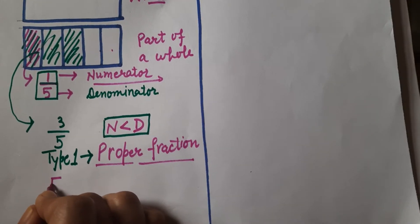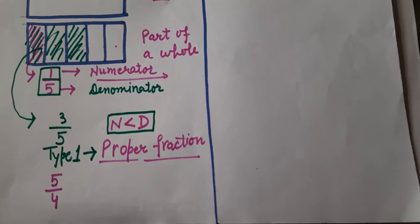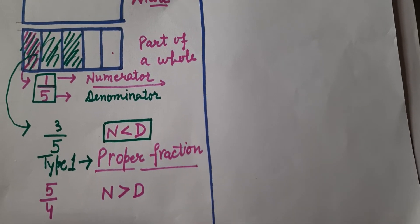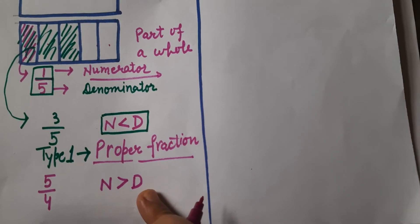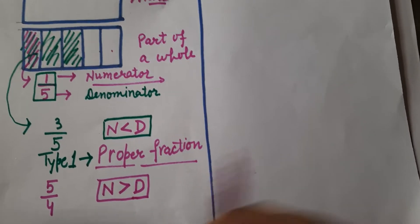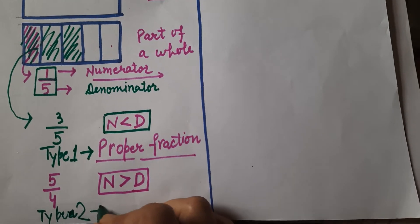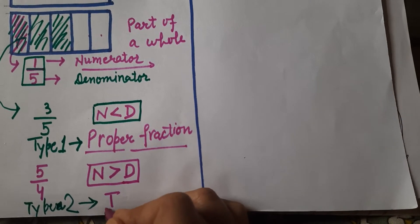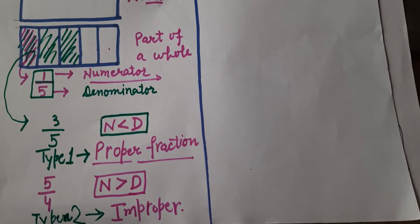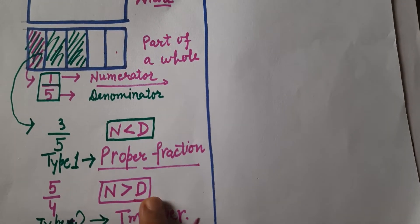Suppose I have a fraction like five upon four. Here you can see the numerator — the upside number — is greater than the denominator. When the numerator is greater than the denominator, that is type number two, and that type is known as an improper fraction.